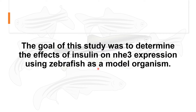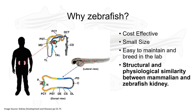The goal of my study was to determine the effects of insulin on NHE3 expression using zebrafish as a model organism. We use zebrafish because they are cost effective, small in size, and easy to maintain and breed in the lab, producing more than 100 embryos per breeding. Additionally, they bear structural and physiological similarities to the mammalian kidney — the zebrafish kidneys are homologous to those of humans and mammals, as shown here.